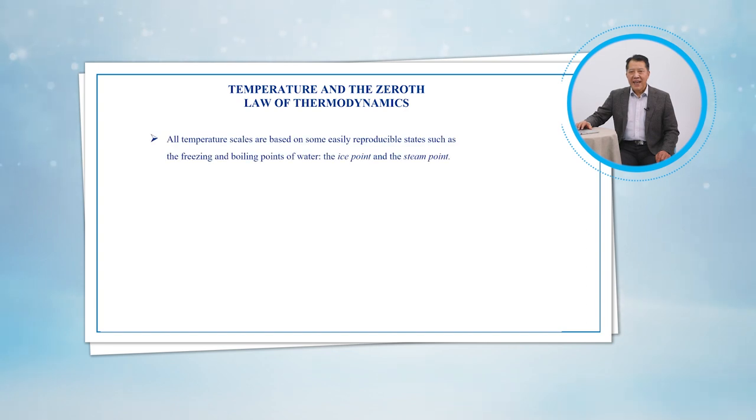Temperature scales enable us to use a common basis for temperature measurements, and several have been introduced throughout history. All temperature scales are based on some easily reproducible states such as the freezing and boiling points of water.